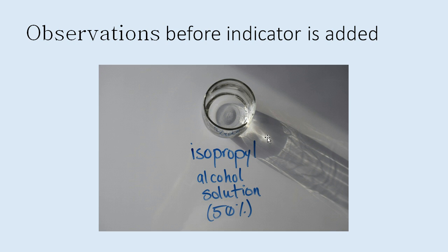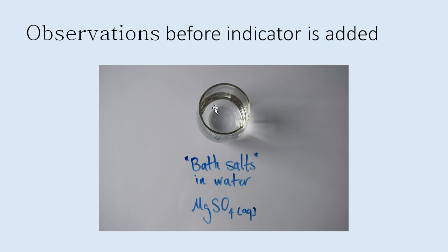Here is baking powder and water. Baking soda and baking powder look the same but they're a little bit different. Here is isopropyl alcohol solution — the rubbing alcohol that somebody might have used to clean out cuts. We probably don't recommend that anymore, but it might be used to clean off jewelry or sterilize something at home. Next, we have bath salts and water. Bath salts are really magnesium sulfate, MgSO₄ — aqueous here, just dissolved in water. They look clear like bath water.